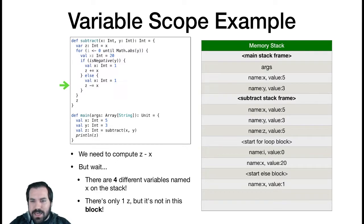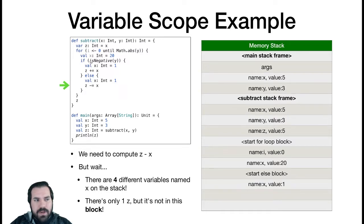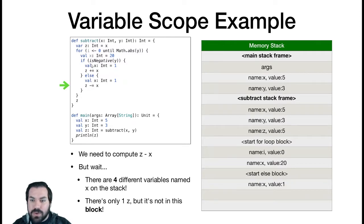For if-else blocks, only one of them is ever executed. Since we're not declaring variables inside the conditional itself — unlike a loop where we declare a variable — the conditional is just a Boolean expression that resolves to a Boolean, which we use to decide where control flows. We then throw away that Boolean; it's never stored on the stack. Since the condition was false here, the if block was completely skipped.